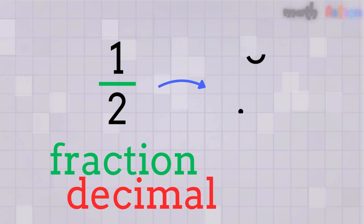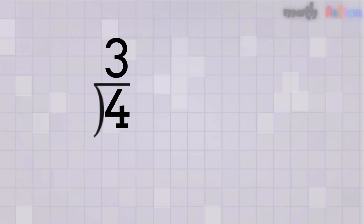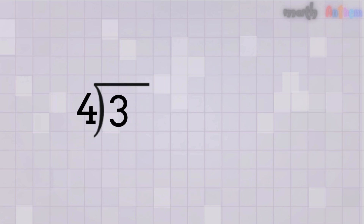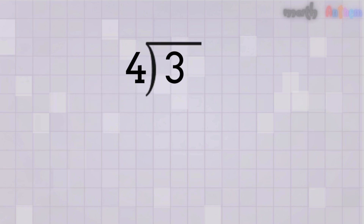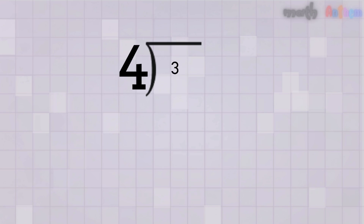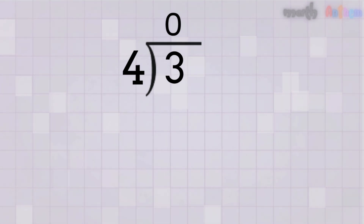Imagine we want to convert three-fourths into a decimal. We use our traditional division symbol — we place the 4 outside and the 3 inside. Now we ask, how many times does 4 go into 3? Well, 4 doesn't go into 3 because 4 is bigger than 3. We write our first zero because it can't go in. Looks like we need a little extra help — that's why the decimal point comes in. We place a decimal point after the 3.